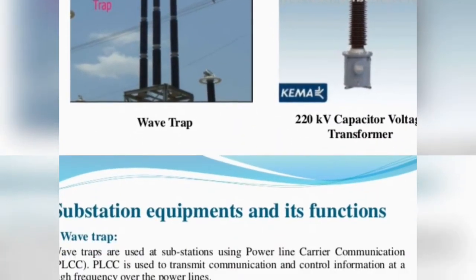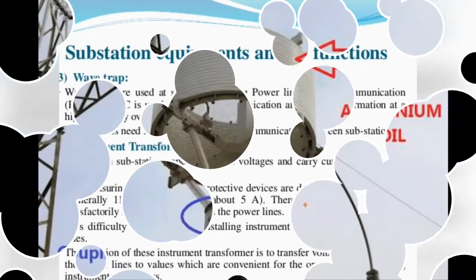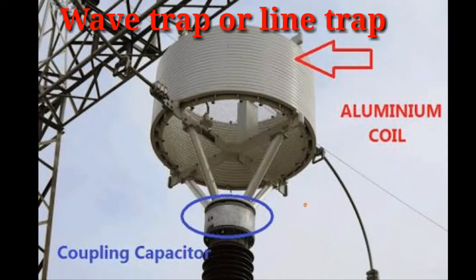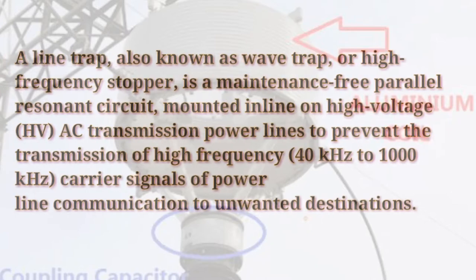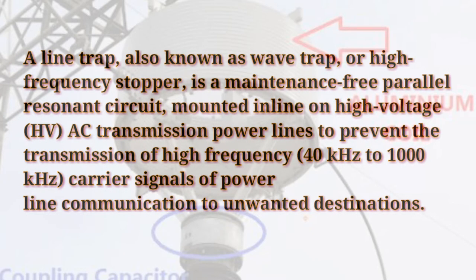These are some of the equipment in a substation — wavetrap, and its functions. The wavetrap, also called a line trap, consists of an aluminum coil and coupling capacitor. The line trap, also known as a wavetrap or high-frequency stopper, is a maintenance-free parallel resonant circuit mounted in line on high-voltage HVAC transmission lines to prevent transmission of high-frequency carrier signals from 40kHz to 1000kHz.